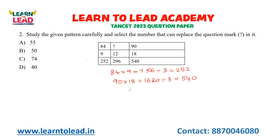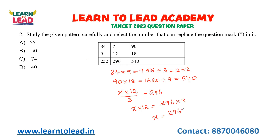Now, X into 12, when divided by 3, gives 296. So X into 12 equals 296 into 3, meaning X equals 296 into 3 divided by 12. Calculating: 74 is the answer. So the relation to the equation shows this pattern, and practicing calculations will help.